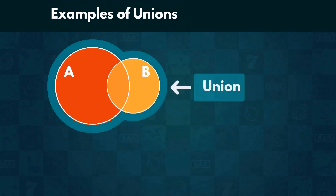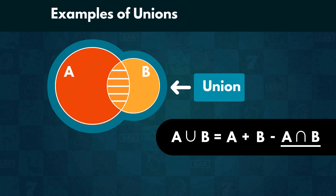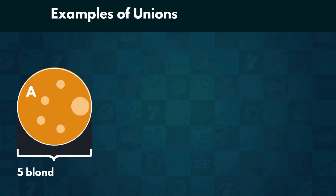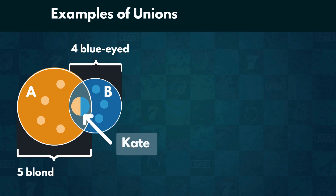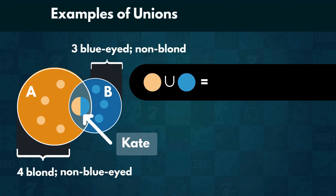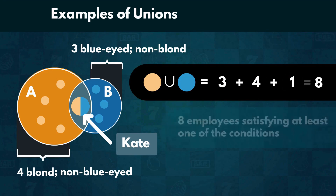If the events intersect, the area of the union is represented by the sum of the two sets minus their intersection. That is because if we simply add up the area of the two sets, we would be double counting every element that is part of the intersection. For instance, five people in the office have blonde hair, four people have blue eyes, and only Kate has both. Therefore, there are only three non-blonde people with blue eyes and four blonde people with non-blue eyes. Thus, the union of blonde and blue-eyed colleagues is the sum of people who have precisely one of the two features, as well as Kate, who has both. Mathematically, this result is three plus four plus one, or eight employees satisfying at least one of the conditions.